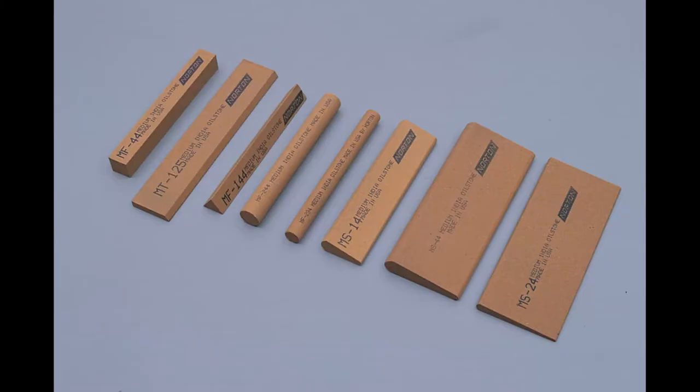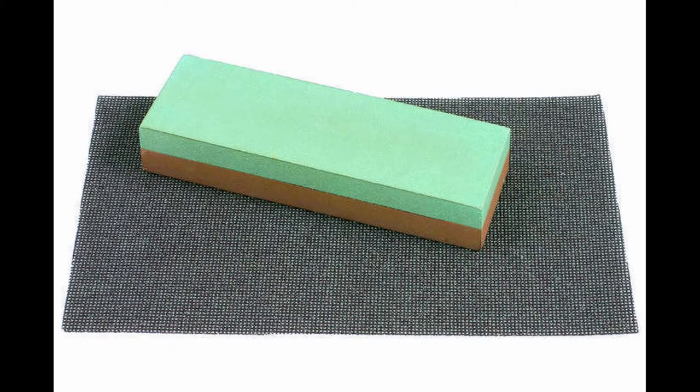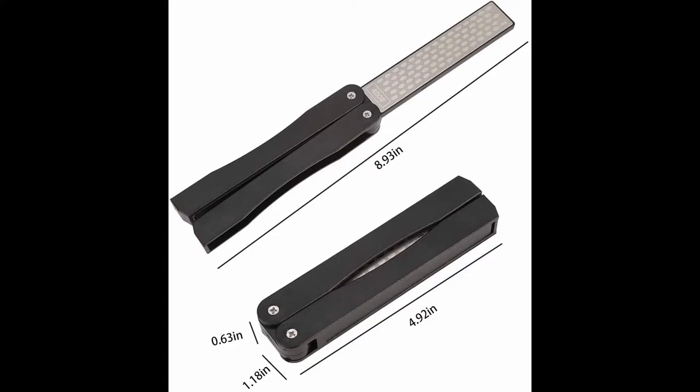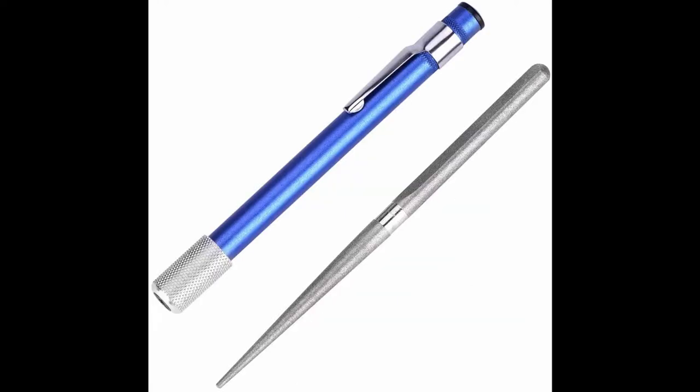They can also be had in specialist shapes so they can be used for things like chainsaws and the teeth of various tools. Some even have a double layer, basically two grit sizes on one piece—coarse on one side and fine on the other. These days they're actually available as a file studded with tiny industrial diamonds, and they're not as expensive as you might think.